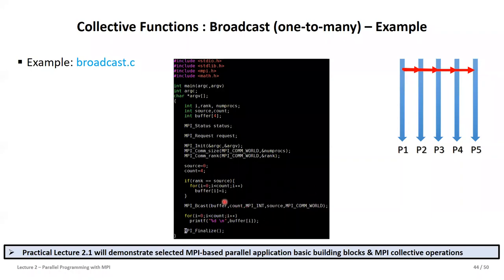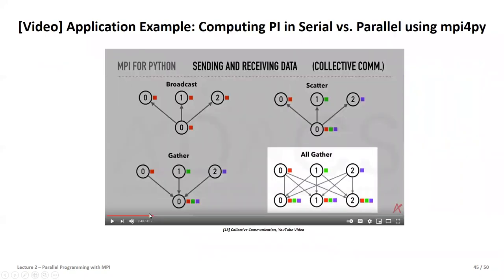We can verify that all other ranks also received the information by checking the buffer with a print statement that is executed by all non-zero ranks. We are getting to more and more powerful functions, and this will be much more elaborated in practical lecture 2.1 with real applications on the real HPC machine. There is another interesting video showing collective operations and the difference between computing PI serially and in parallel using MPI.